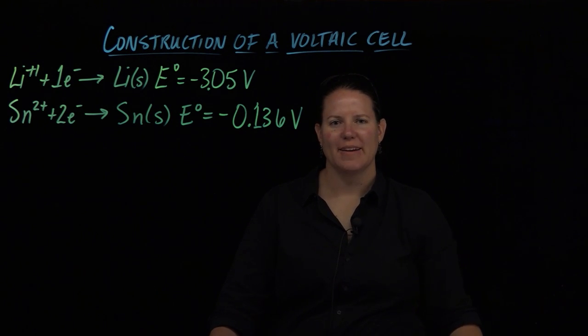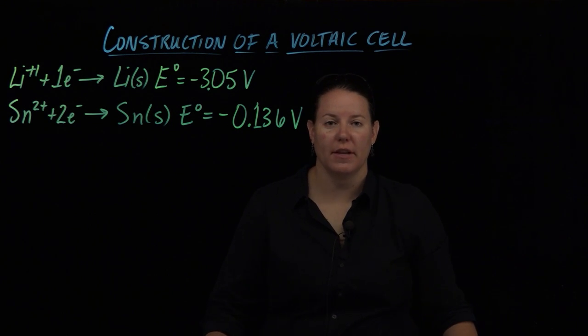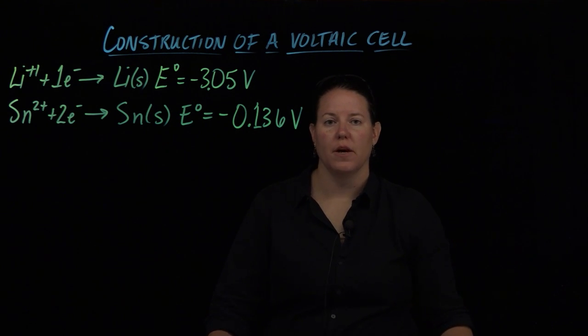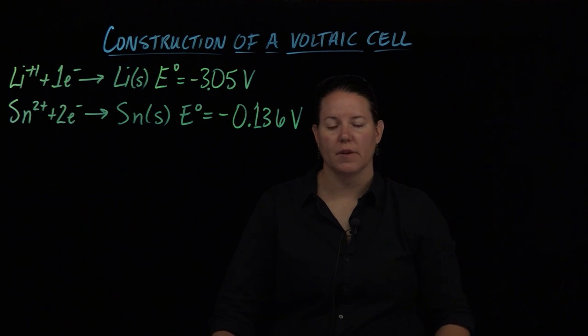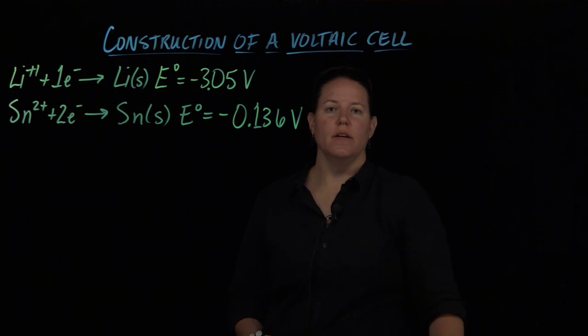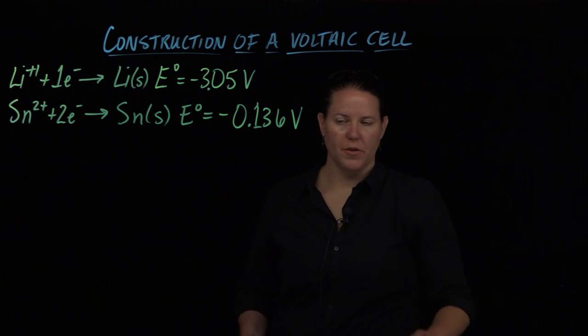Hello, we're back in General Chemistry 2 and we're talking about electrochemistry. We're continuing our discussion about voltaic cells and batteries, also known as galvanic cells. Today we're going to do calculations and some construction of a voltaic cell - what the battery actually looks like in terms of what you would build in the lab.